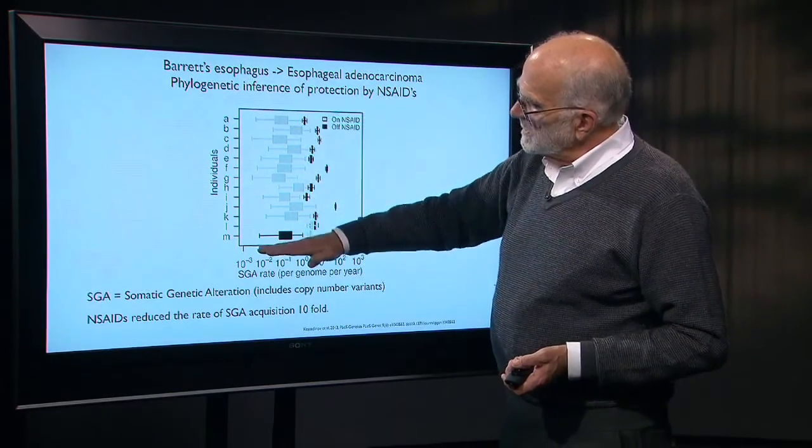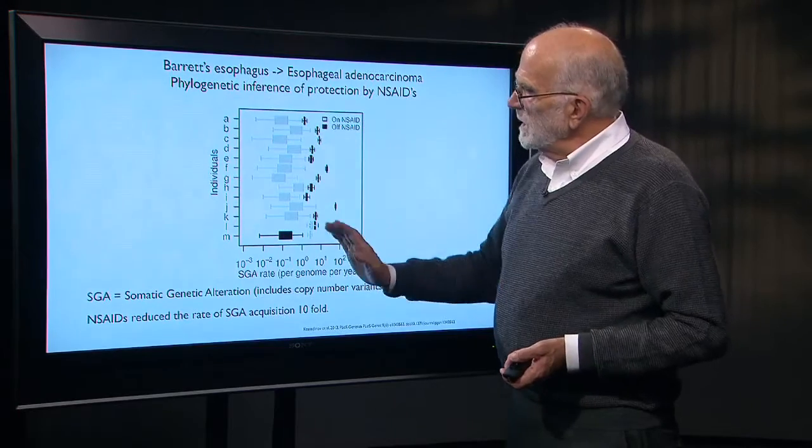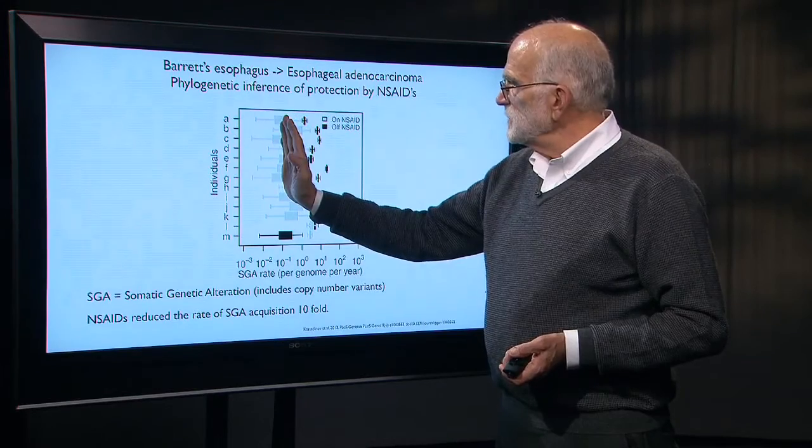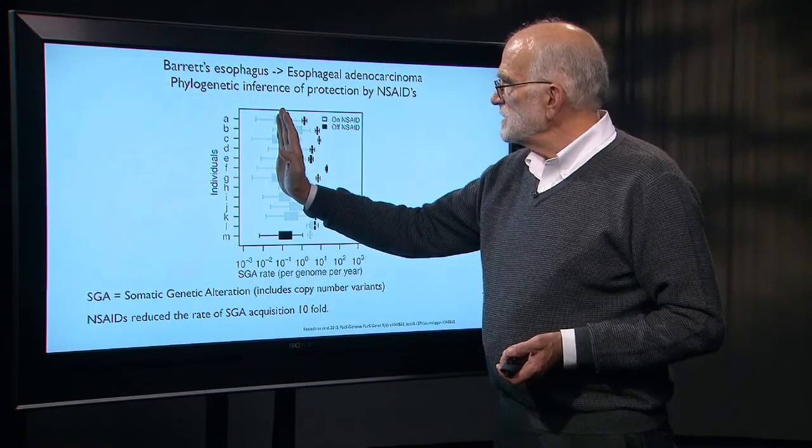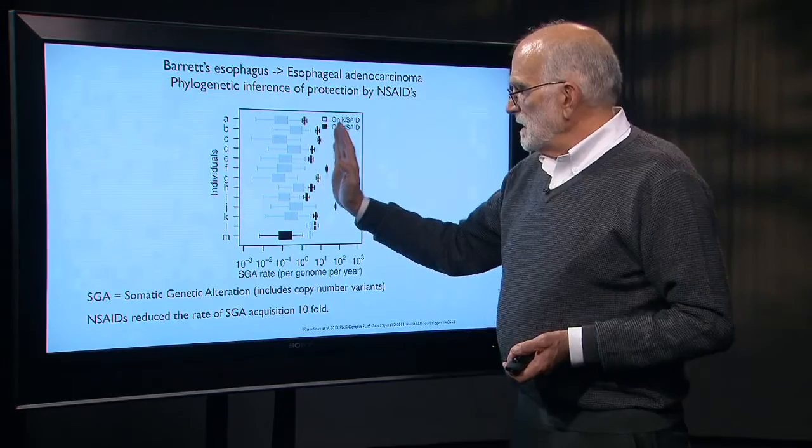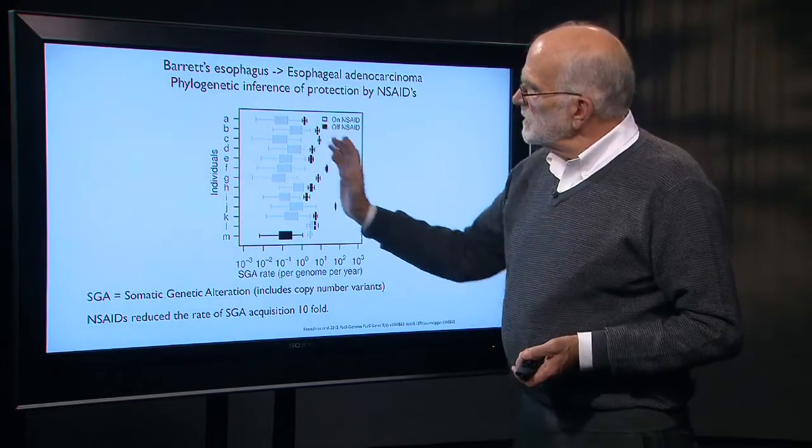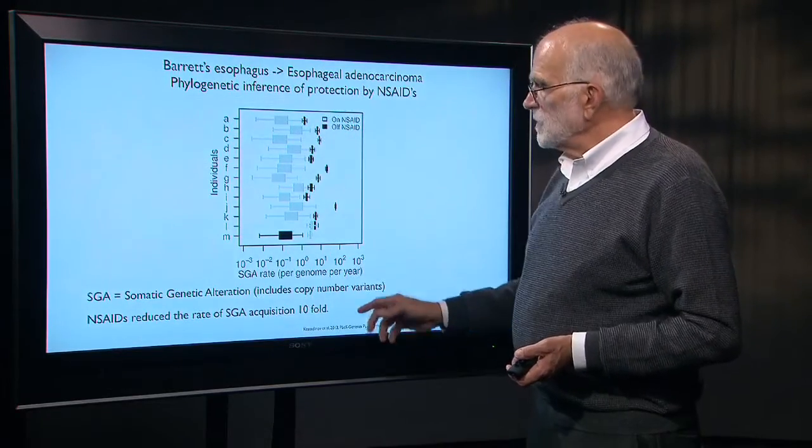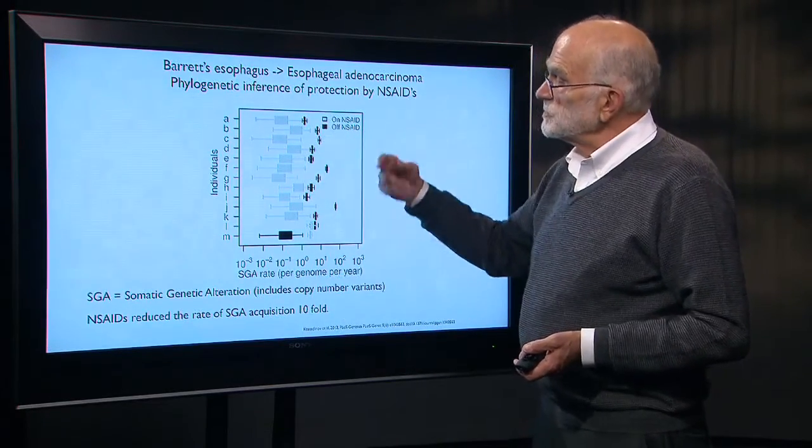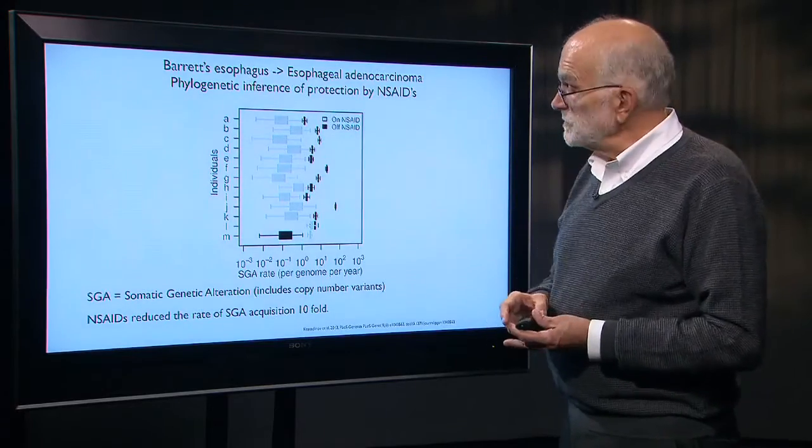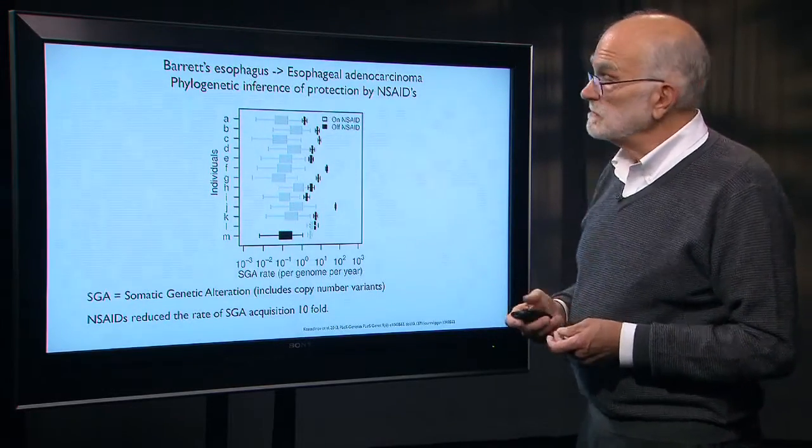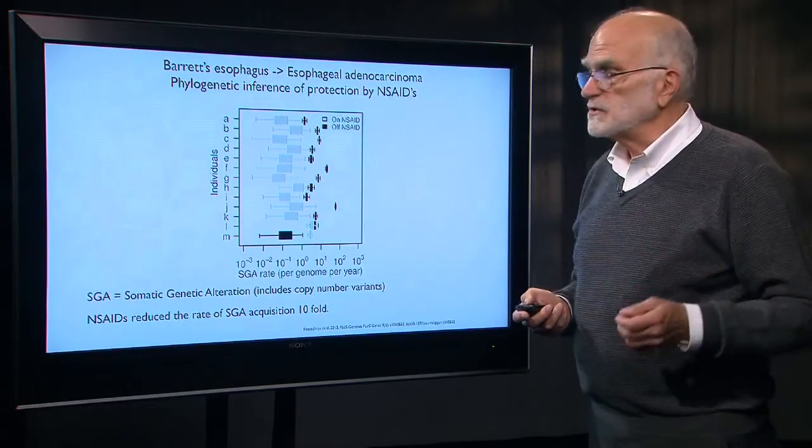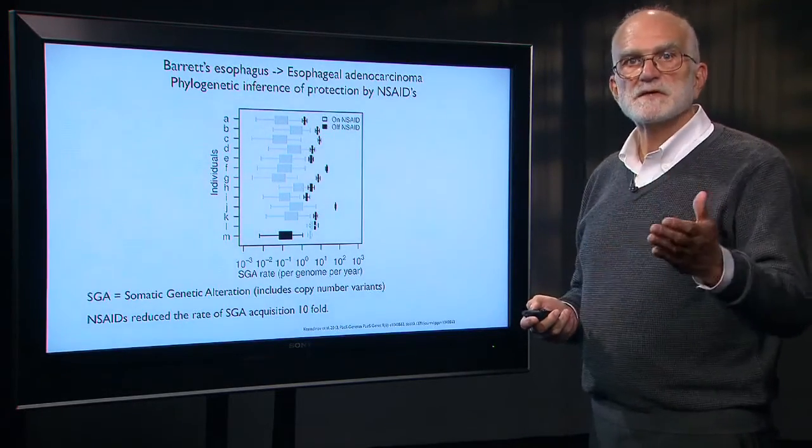And what we see are the rate of somatic genetic alteration when they are on the NSAID and when they are off it. So we can infer from that on average that using these drugs reduced the rate at which there were somatic genetic alterations about tenfold. That is a very neat kind of use of molecular phylogenetics to understand the efficacy of cancer therapy.